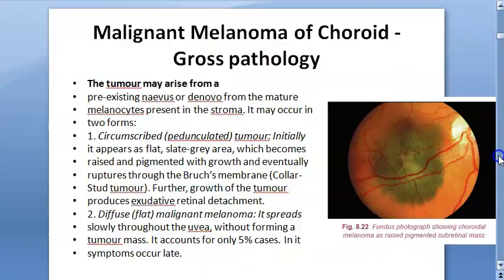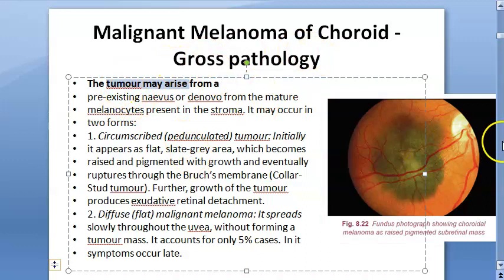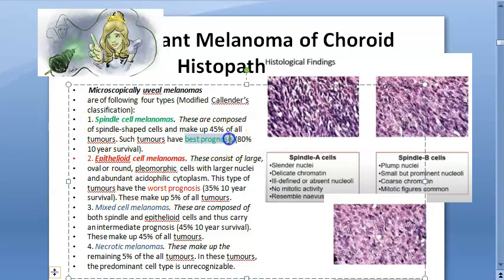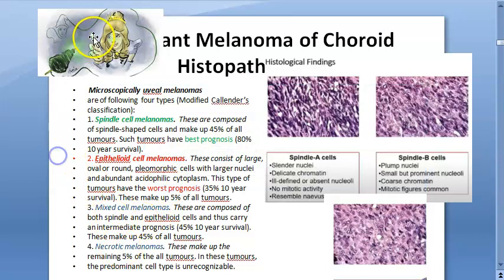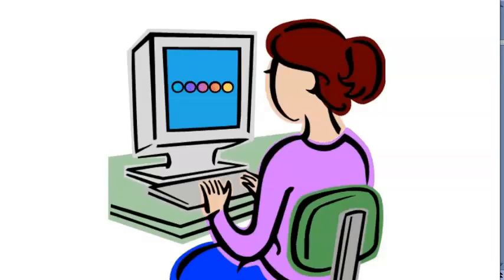On gross pathology, the tumor can be either pedunculated or flat. On histopathology, there are spindle cells or epithelioid cells. Spindle cell melanoma has the best prognosis — remember this with the mnemonic 'Sleeping Beauty Spindle' — while epithelioid cells have the worst prognosis. Mixed and necrotic types also exist.